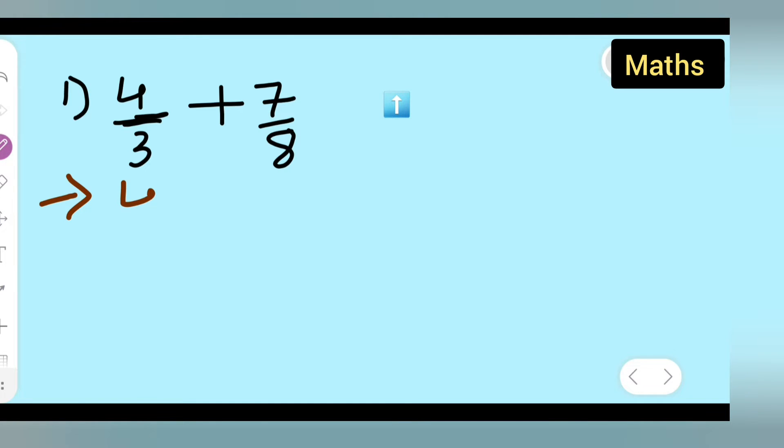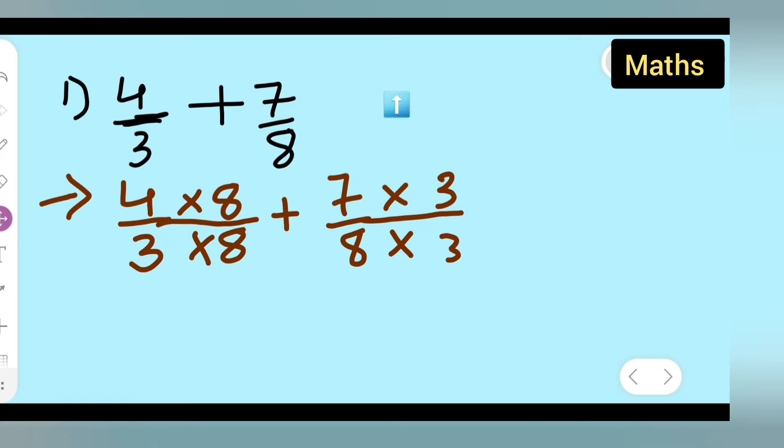Let us do cross multiplication. Take 4 upon 3 and multiply with the denominator of the other. Plus 7 upon 8. You have to multiply both numerator and denominator by 3 so that we get the same denominators. When they're the same, it will be easy to add.